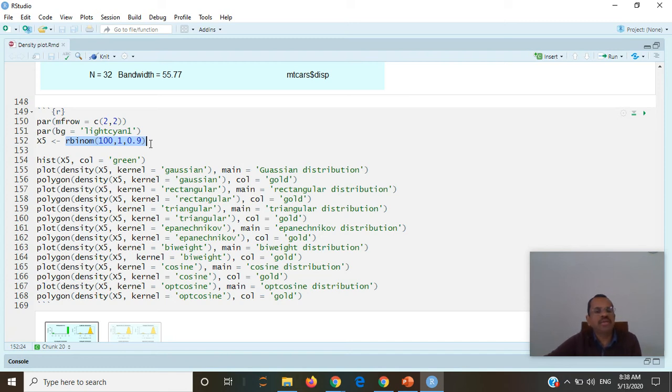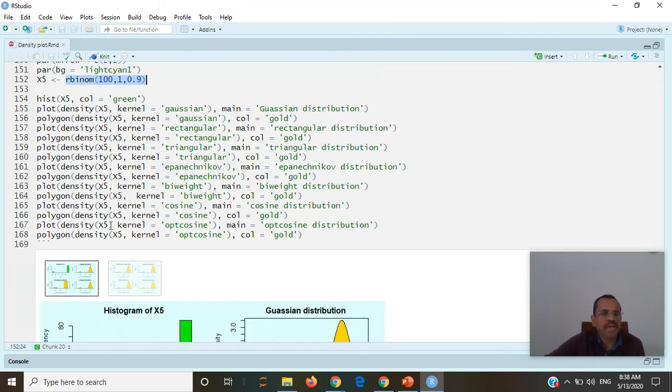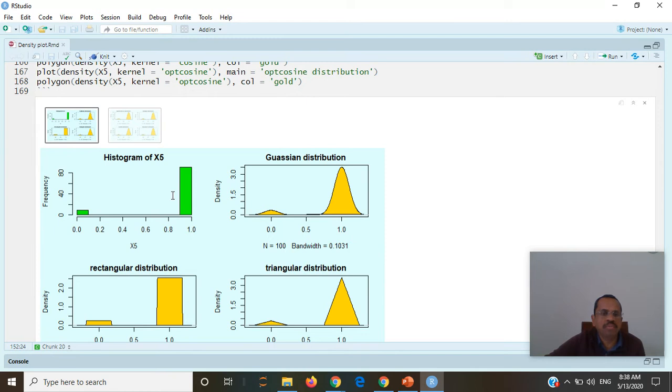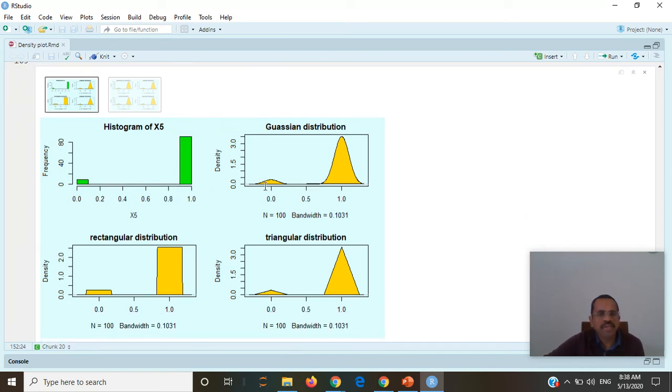Whenever I created those 100 numbers roughly 90 numbers will be 1 and 10 numbers will be 0. I created graph, this is a histogram with those numbers. These are 10 percent zeros and 90 percent ones. Same data is represented in density plot which shows a different type of distributions.